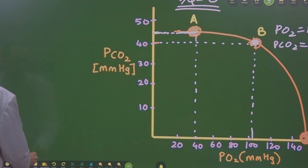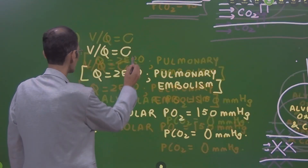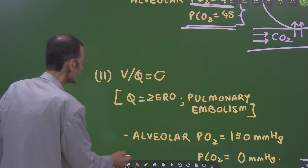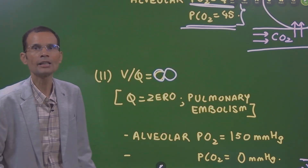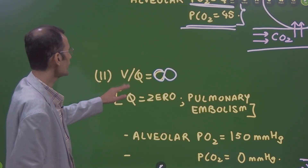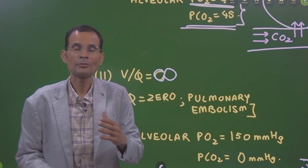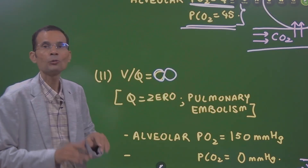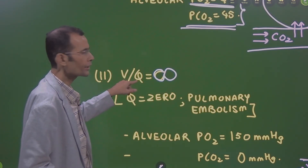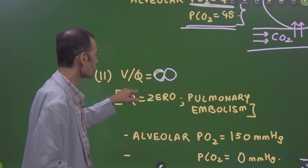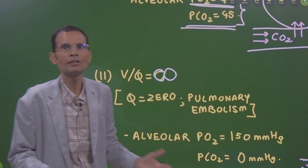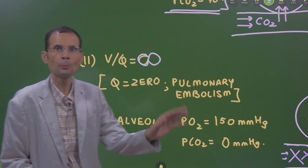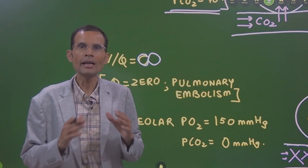Another deviation is when the V/Q ratio is infinity — infinite. That happens when the denominator Q, that is perfusion, is zero. If blood flow perfusion is zero, V/Q ratio becomes infinity. Zero blood flow happens in the condition of pulmonary embolism.